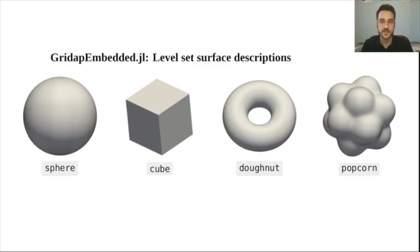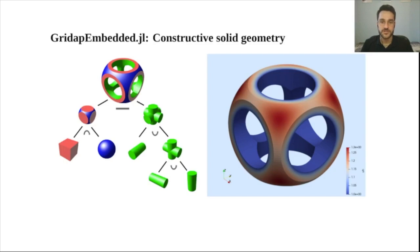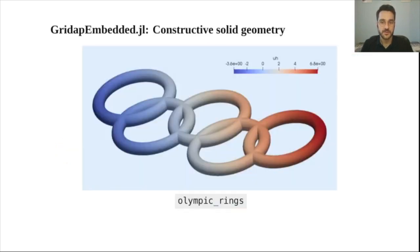You can also perform Boolean operations on the primitive level set functions to construct more complex geometries such as this one here or these Olympic rings.